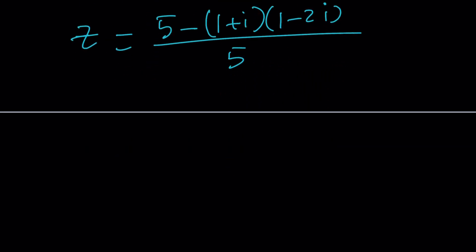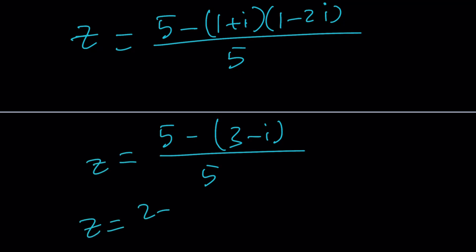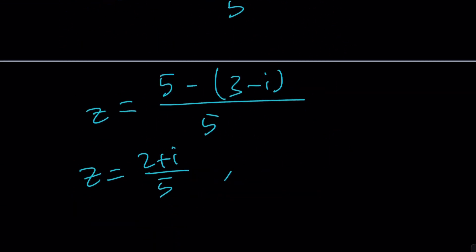Multiplying the two complex numbers: 1 times 1 is 1, and I times negative 2I is positive 2, so 1 plus 2 is 3. Then we get negative 2I plus I, which is minus I. So the numerator is 3 minus I, giving Z equals 2 plus I over 5. Wait — 5 minus the quantity 3 minus I is 2 plus I, so Z equals 2 plus I over 5. And W equals 1 minus 2I over 5. That's our solution. Since this is a linear system, we only have one pair of values.